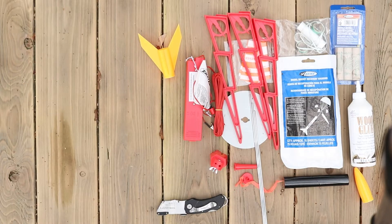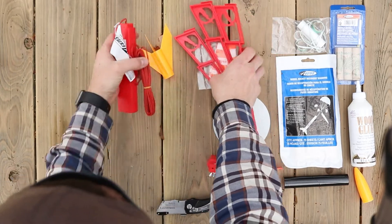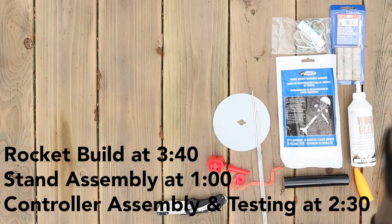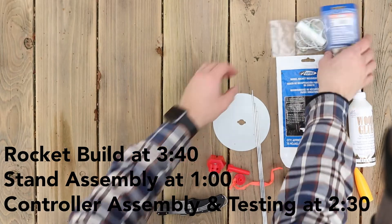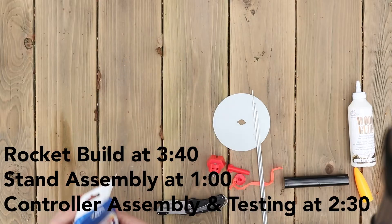We are assembling the full Alpha 3 launch set that includes rocket, stand, and controller. If you missed our last video of unboxing this kit piece by piece, the link is in our bio.